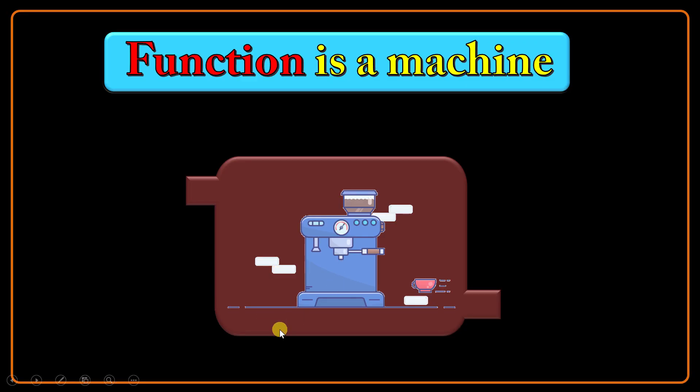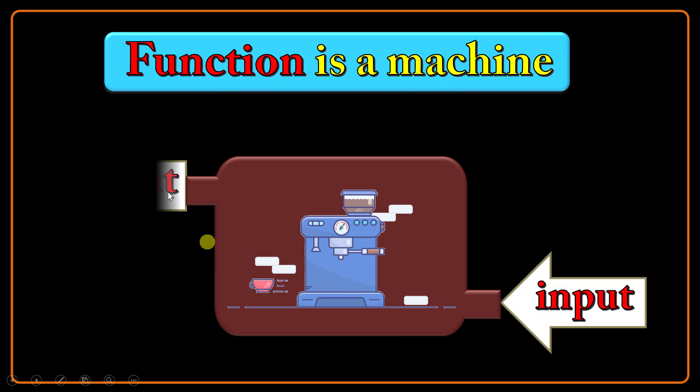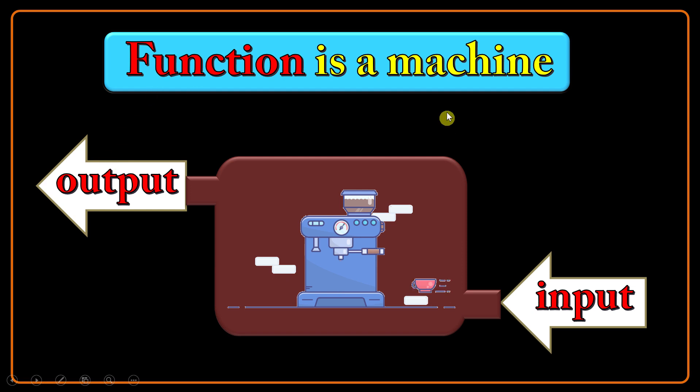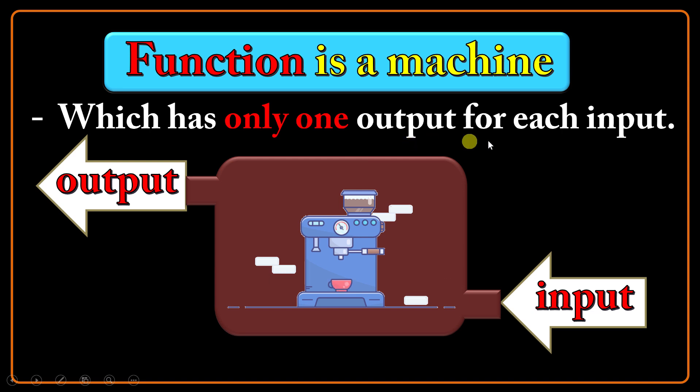Pay attention: function is a machine which has input and output, but not all machines are regarded as function. Function is a machine which has only one output for each input. So if you give special input, you will have one and only one output for that, not more.